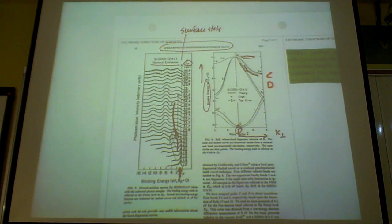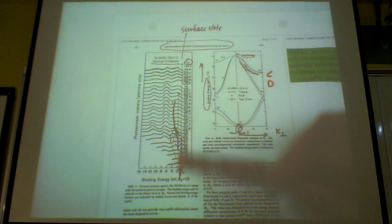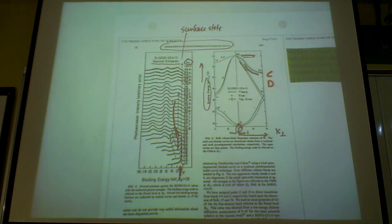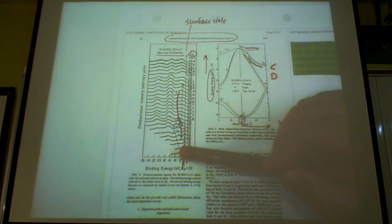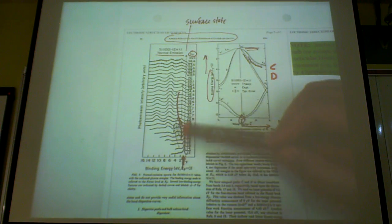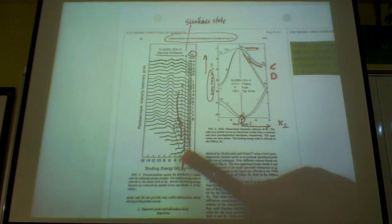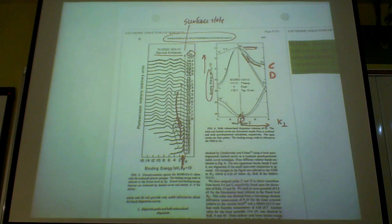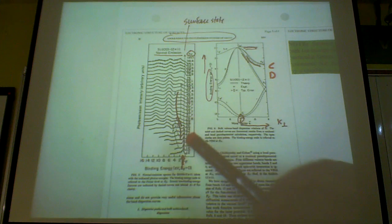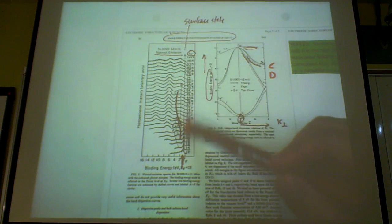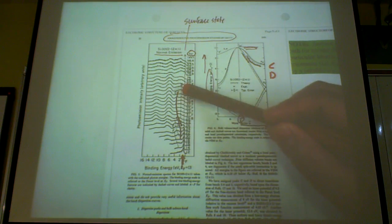So what happens if you change your k perpendicular by changing your photon energy? Any state located on the surface will be unchanged. Why? Because you have a fixed parallel component here. You're changing k perpendicular and keeping k parallel fixed. And k parallel, of course, only surface states are invariant in k parallel. So if you see a surface state, when you change the photon energy, this peak should stay the same at the same energy.